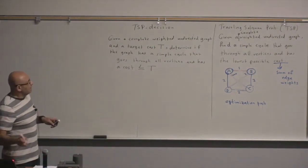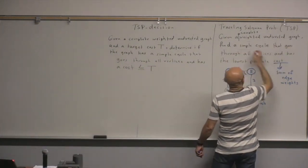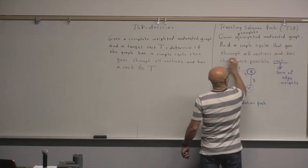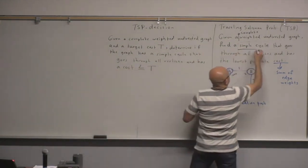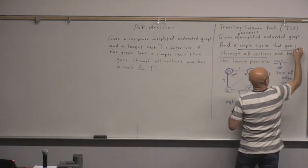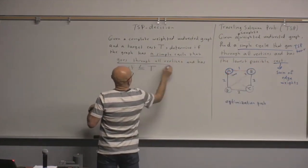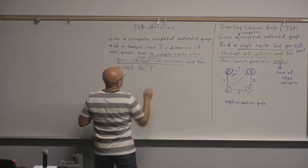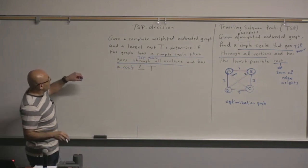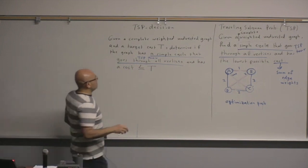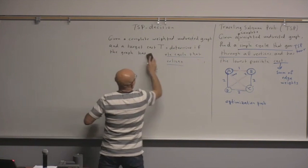This simple cycle that goes through all vertices, from now on we will refer to this as a TSP tour. So let's rewrite the problem using 'TSP tour': determine if the graph has a TSP tour with cost less than or equal to T.